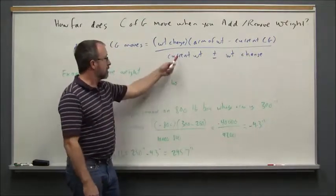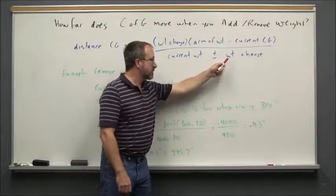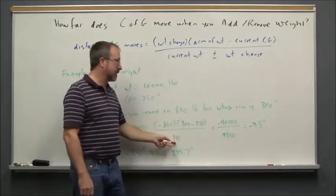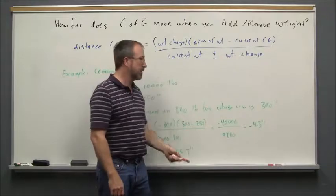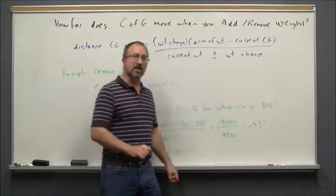On the bottom we take the current weight of 10,000 pounds and we're removing weight so we subtract the 800 pounds we're removing, so that becomes 9,200. When you divide that you get minus 4.3 inches - that's the distance that it moves.